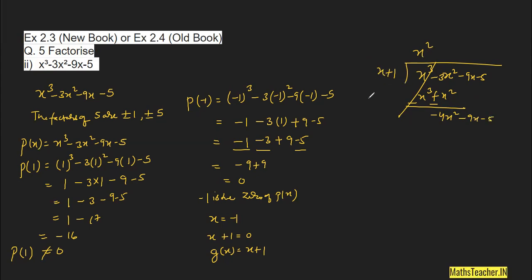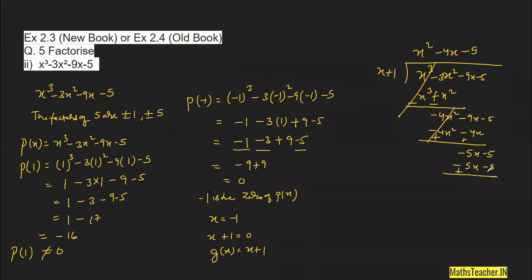Now multiply x by something to get −4x²: that is −4x. So −4x times (x + 1) = −4x² − 4x. Subtracting and bringing down: −9x minus (−4x) = −5x. Bring down −5. Finally, multiply −5 by (x + 1): −5x − 5. Changing signs and subtracting gives a remainder of zero, confirming that (x + 1) is indeed a factor of x³ − 3x² − 9x − 5.